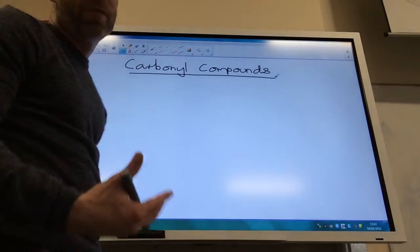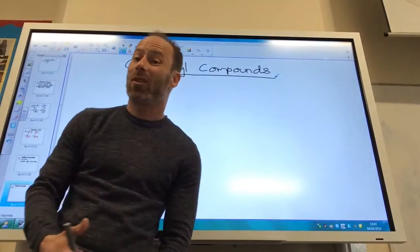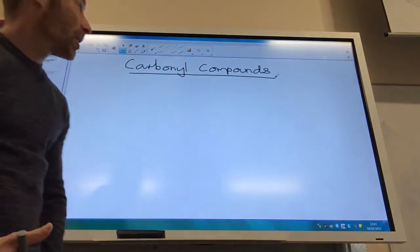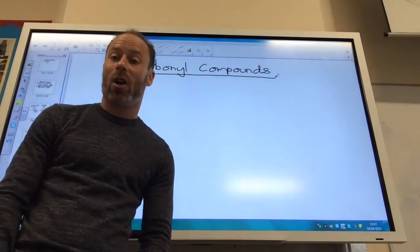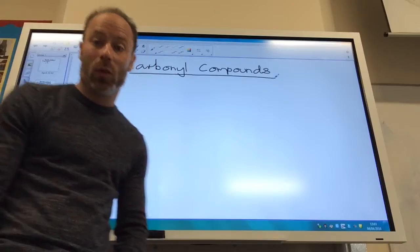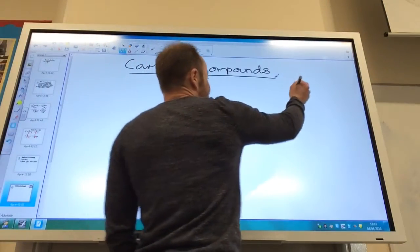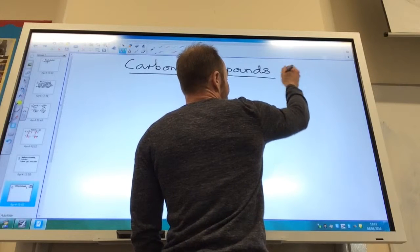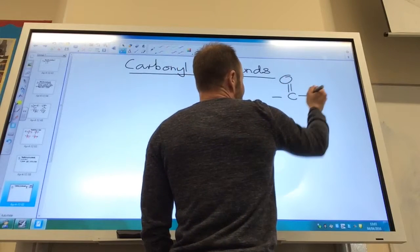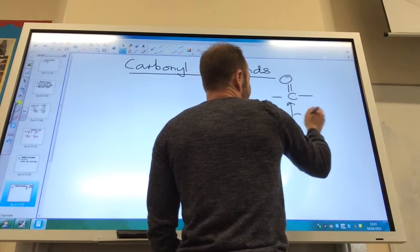Before we move on to further reactions of alcohols, we need to talk about carbonyls. This is a new classification of organic compound that you need to know. Carbonyl compounds contain the C double bond O group. That is the carbonyl group.